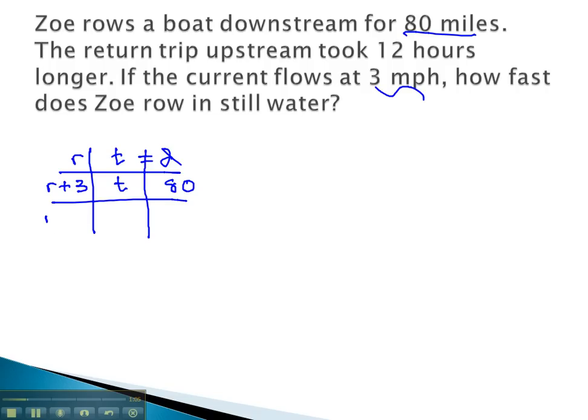When she turns around, her rate is now decreased by 3 miles per hour. We also know the trip took 12 hours longer. This means we need to increase our time by 12 to cover the same distance of 80.